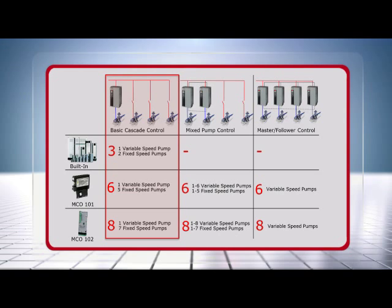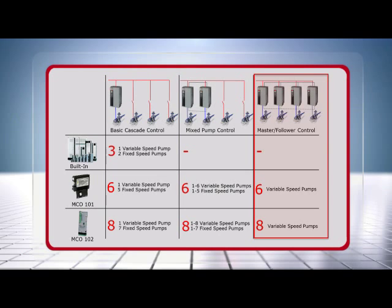An application with a basic cascade controller consists of a variable speed pump connected to a drive and one or more fixed speed pumps. These pumps run directly online or are connected to a soft starter. The contactors for the fixed speed pumps are operated by the relays of the drive or via a cascade controller option. Typical applications are booster sets. For master follower control, each pump is speed controlled, meaning each pump is connected to a drive. Each follower receives its reference as a pulse signal from the master drive. The followers are started by means of relays in the master. In this application, all pumps run at the same speed.